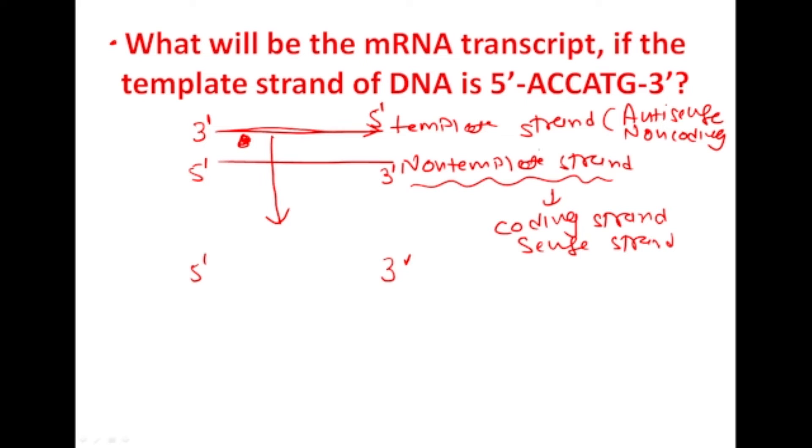Here, the sequence given is 5' ACCATG 3' of the template strand. So as we know it reads from 3' to 5', so let us convert it to 3' to 5', so it will be GTACCA. I write it down here GTACCA. This is our template strand.